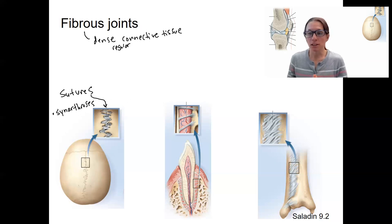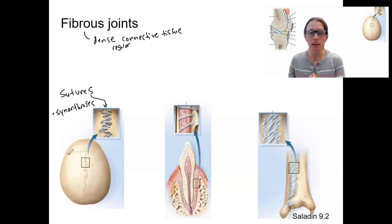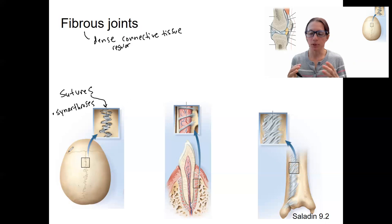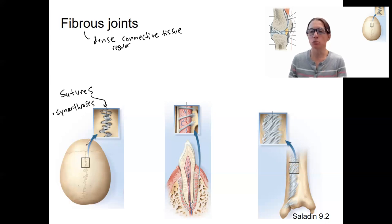This type of joint is important for skull and brain growth during development. There are certain places between these bones where fontanelles exist in fetuses and in children as the brain grows — little holes that allow the brain and skull to grow. By the time you're an adult, there's no more growth, those fontanelles are closed up, and the sutures are completely immobile.